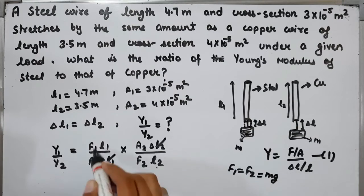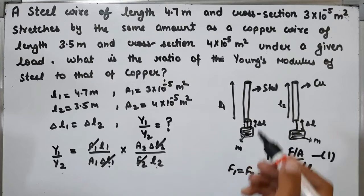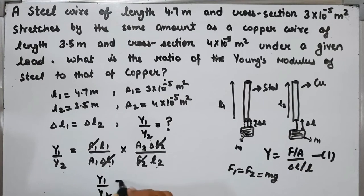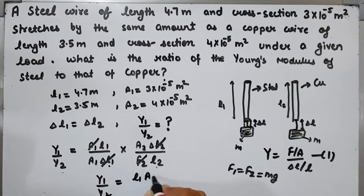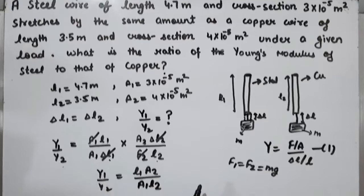Since F1 = F2, these forces also cancel. So the ratio Y1/Y2 = (L1×A2)/(A1×L2). Now we'll substitute the values.